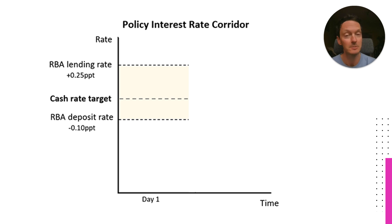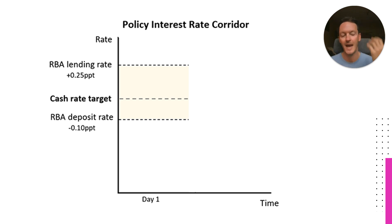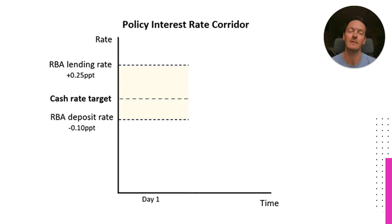At the time you're watching this video it's probably going to be different to 4%, but let's just say it's 4%. At the end of the day, the banks are not allowed to have any deficit funds in their exchange settlement accounts. If you are, say, the Commonwealth Bank, and lots of people have been spending their money that particular day — more than other banks have been depositing into your account — that particular bank is going to have more money going out than coming in, and at the end of the day they're going to essentially have a negative balance on their exchange settlement account. That's something financial institutions are not allowed to do, so they're going to have to borrow that money from somewhere.